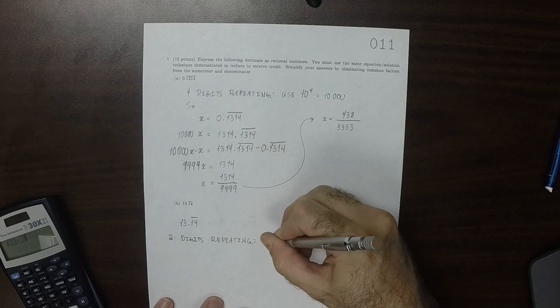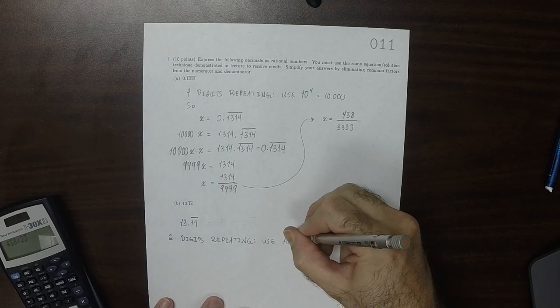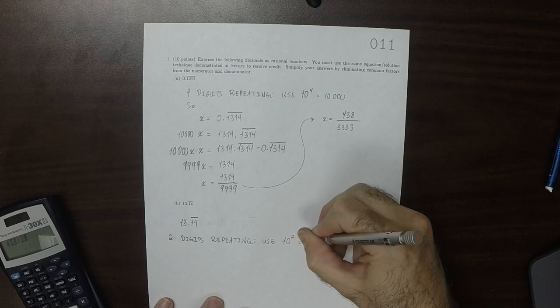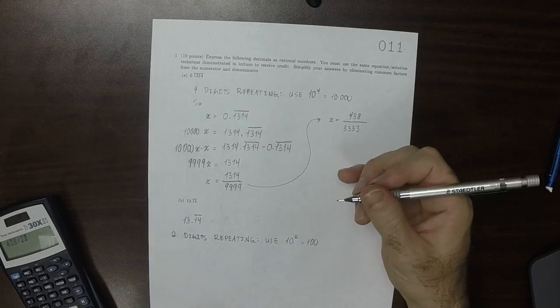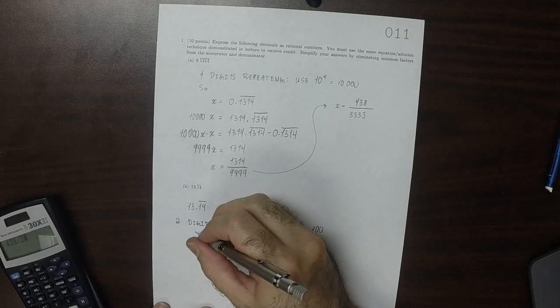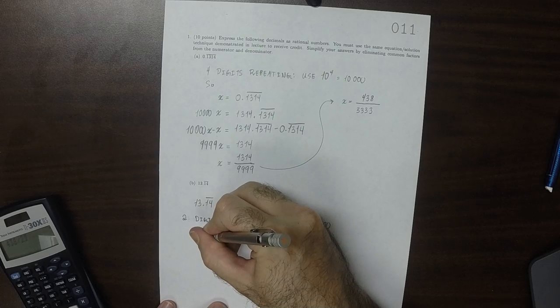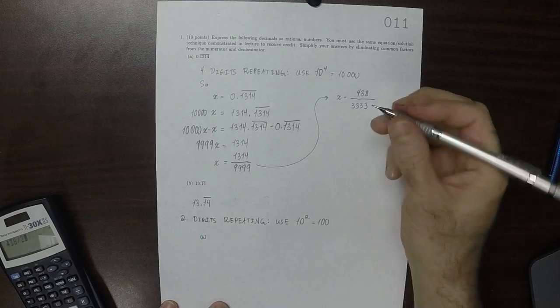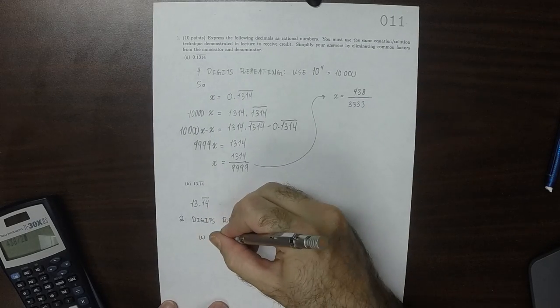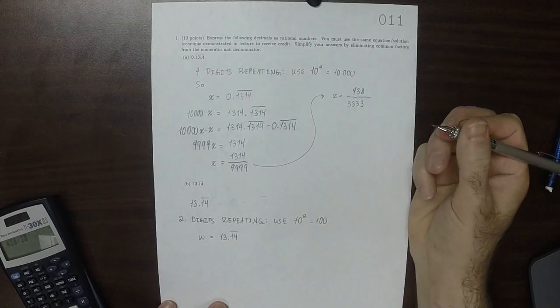So we'll use 10 to the exponent 2, which is 100. And since I already used x up there, just to make sure you don't get too attached to x, I'll call this w. So w is 13.14 with 14 repeating.